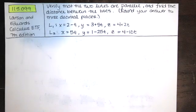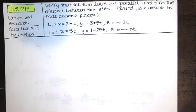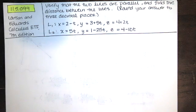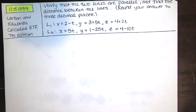In this video, we solve problem 11.5.099 from the Larson and Edwards Calculus Early Transcendental Functions text, 7th edition. We're asked to verify that the two lines are parallel and then find the distance between the two lines, rounding our final answer to three decimal places.